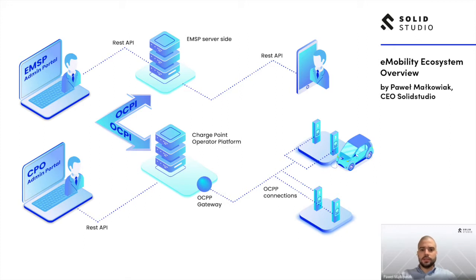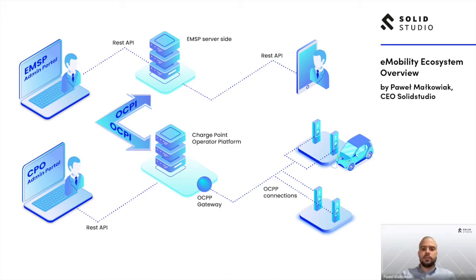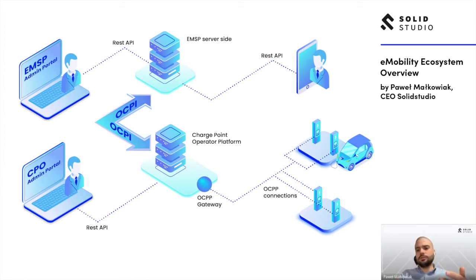The EMSP — the e-mobility service provider — is the first player. The functionalities I briefly covered are what every EMSP should be able to offer. The EMSP is the party that takes care of their customers: it should know how to set pricing and present it to EV drivers, how to do marketing, how to manage subscriptions, and how to make users return to their app. The EMSP application is responsible for handling EV drivers and is focused mostly on the B2C market.